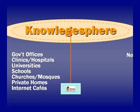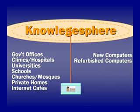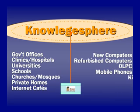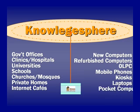And everyone can connect. They can use whatever device they want — a new computer, a used computer, one laptop per child, a mobile phone, laptops, kiosks, pocket computers. What's really wonderful about this is that the organization providing the information doesn't need to provide the computers. The knowledge sphere model leverages local interest and infrastructure.